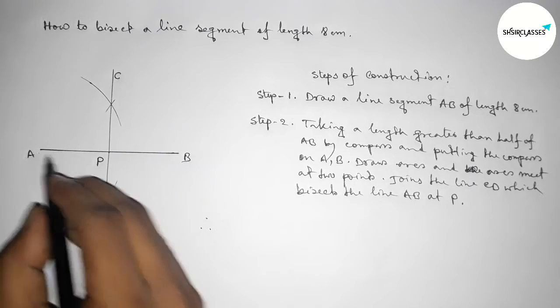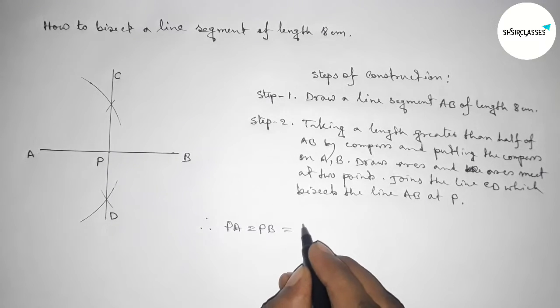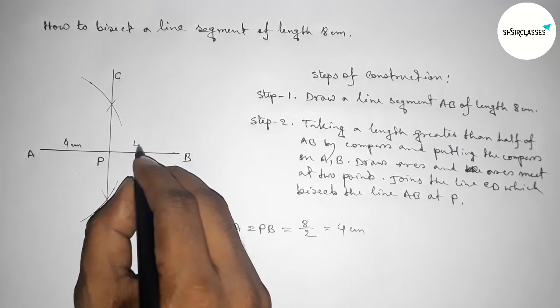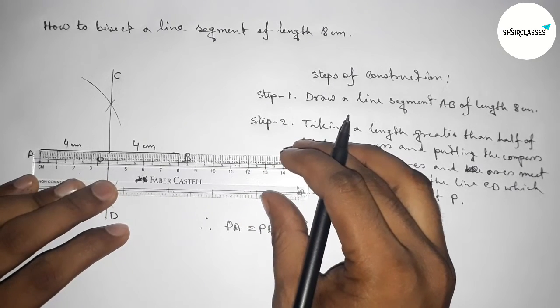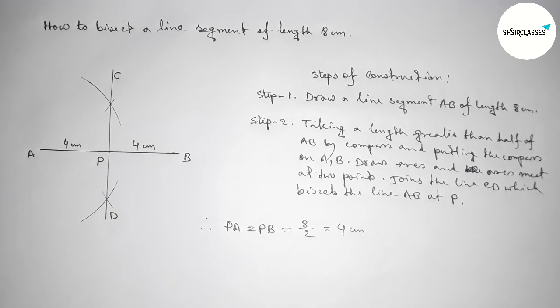Therefore, the length PA and PB are equal. So PA equals PB equals 8 divided by 2, which is obviously four centimeters. So this length is four centimeters, this length is four centimeters. Now checking this: this is eight, and this is perfectly four, four centimeters. So that's all, thanks for watching you.